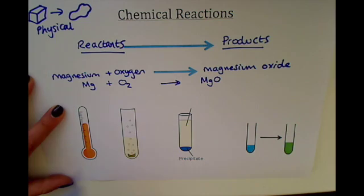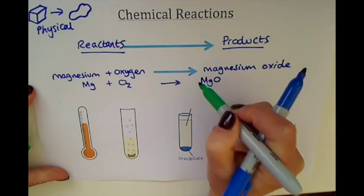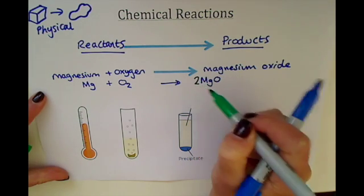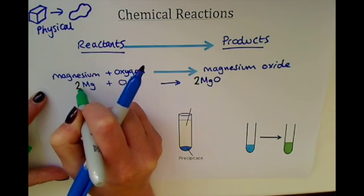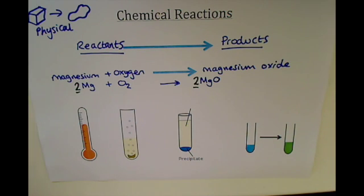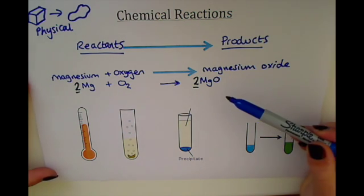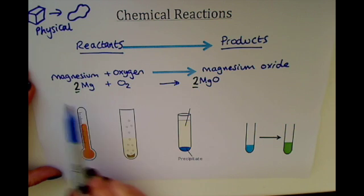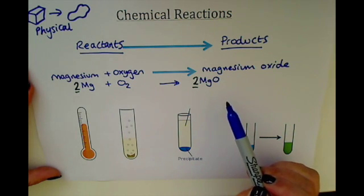We need to balance this equation: we have two oxygens here, so we put a big two here, and because we now have two magnesiums we need to put a big two here as well. I'm not going to discuss balancing equations in this video, but if you want to know more, have a look at my video on balancing equations. So whether you write a word equation or the symbol equation, you have reactants combining together to form new substances which we call products.